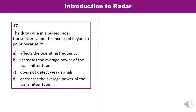Question 17: The duty cycle in a pulse radar transmitter cannot be increased beyond a point. Why? Options: it affects operating frequency, increases average power, does not detect weak signals, or decreases average power. Duty cycle is the ratio of average power to peak power. If duty cycle is increased beyond a limit, it increases the average power of the transmitter tube. So D is the correct answer.